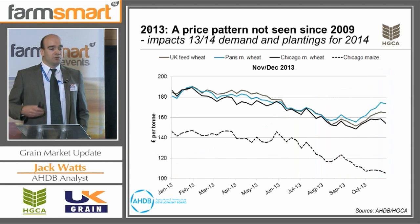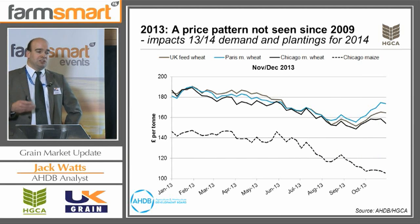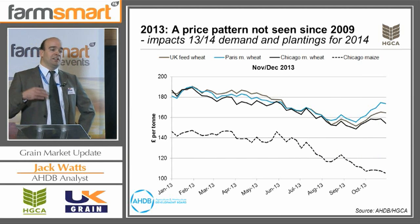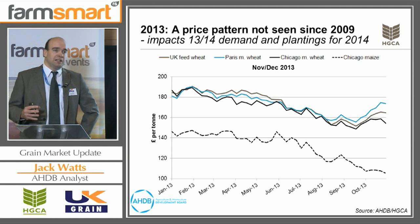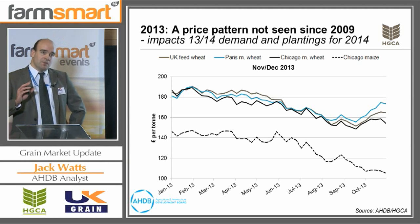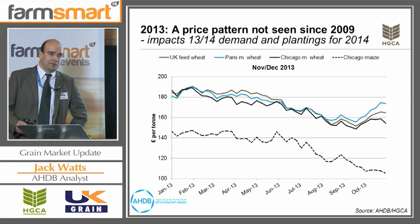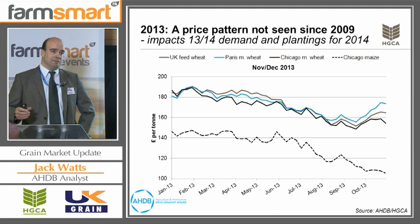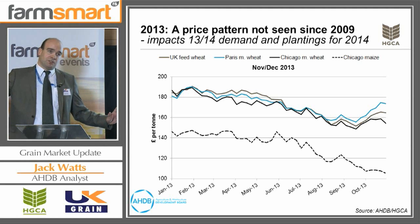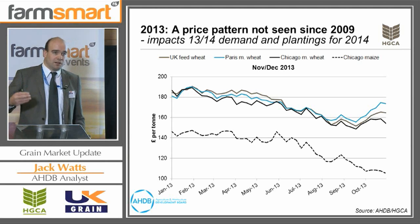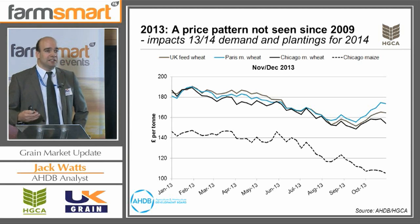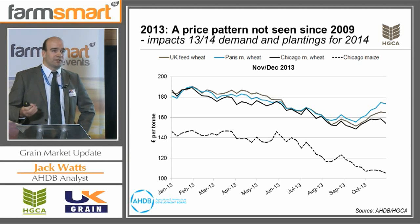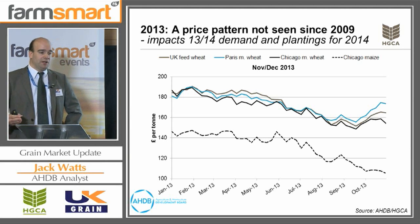Of course we're all aware that we've seen this downtrend in prices in general as we've come through the growing season and into the harvest period, but there are some real unique differences. What we're seeing this year is a price trend we really haven't seen since 2009. In 2010, 2011, and 2012, from planting through to the end of the marketing season, there was a general upward detail. That trend has been somewhat reversed this season because we haven't seen on a global scale any major weather event impacting production, and so the market has taken this bearish, price-negative approach as we come through harvest and into the autumn.